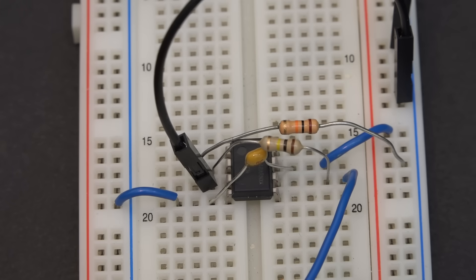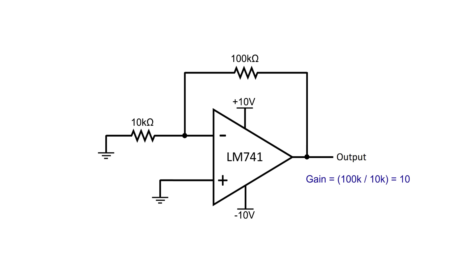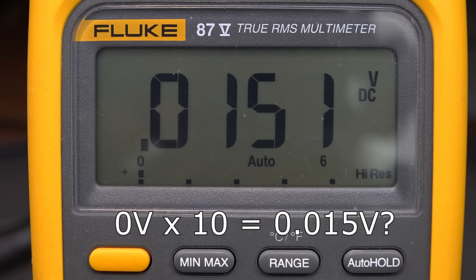Okay, let's move on to another non-ideality. Input offset voltages. I have an LM741 here configured as an amplifier with a gain of 10. I'm going to connect the circuit ground to the input of this amplifier, and 0V in multiplied by 10 should give us 0V out. Let me connect my multimeter to measure the output, and we get 15 millivolts on the output. Well that's pretty close to 0. It might as well be background noise, right?